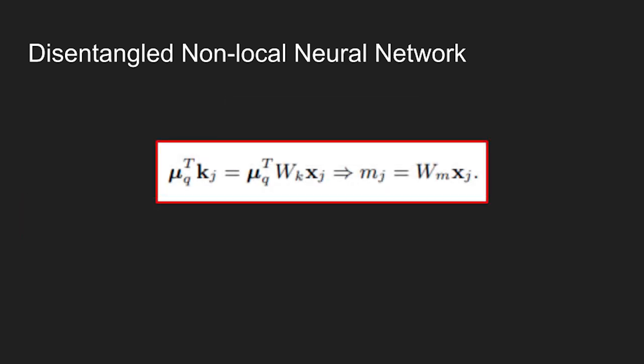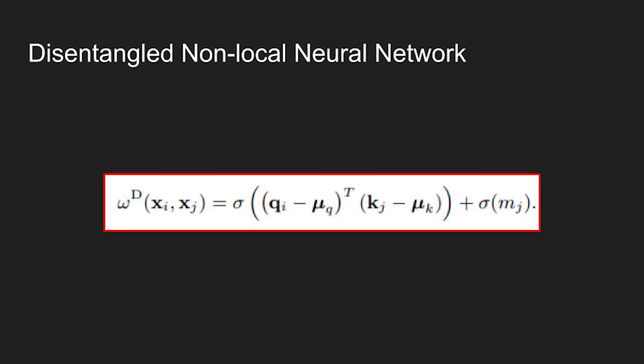The second modification is to change the transformation wk in unary term to be an independent linear transformation wm with output dimension of 1. The use of wk on both pairwise and unary term is a problem because it couples the computation of the two terms. Having these two changes gives us the final disentangled non-local neural network formulation shown in the equation.